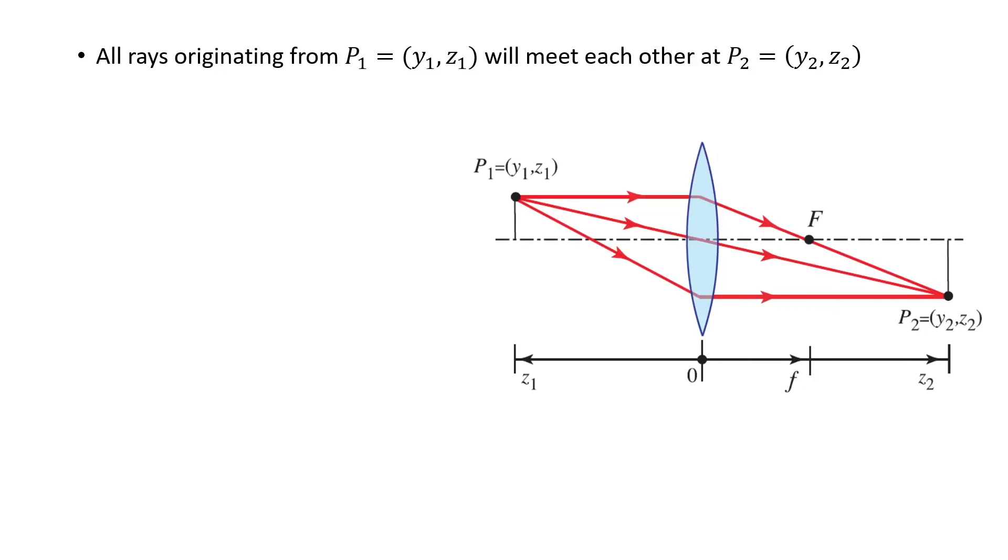Now we see an example of a thin lens. This is a converging lens. And we have a source located at point P1, whose coordinates are Y1 and Z1. And the image forms on the other side of the lens with coordinates Y2 and Z2.